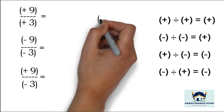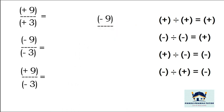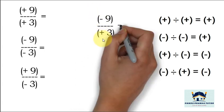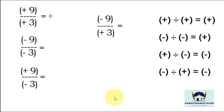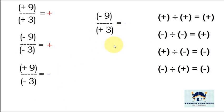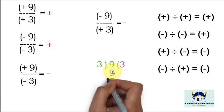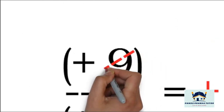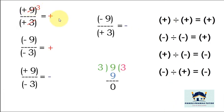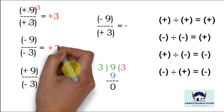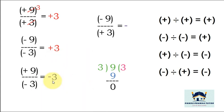Last example: minus 9 divided by plus 3. First write the sign — different signs, so answer is minus. Then divide 9 by 3: 3 threes are 9, so 9 divided by 3 is 3. Therefore the answer is minus 3. The division of the numbers is the same, but the sign makes the difference. Two numbers have different signs, therefore the answer will be minus.